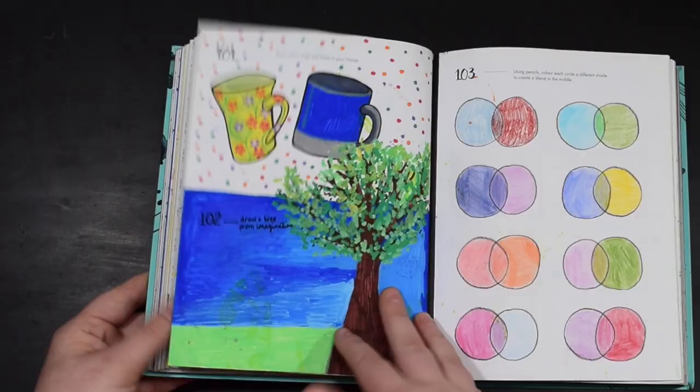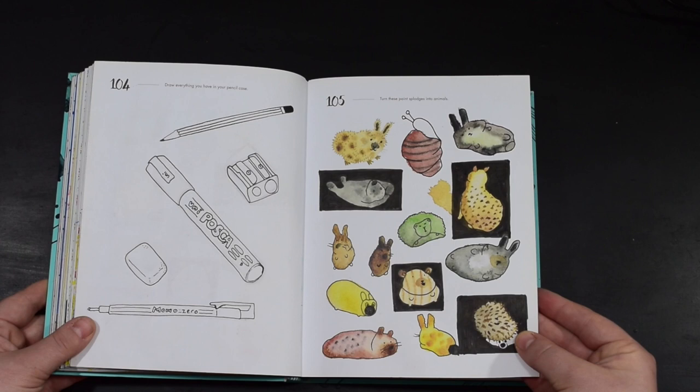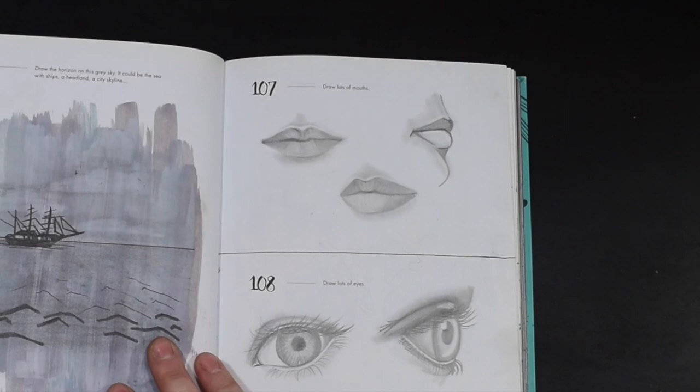We've got some coloring-in pages. We also had another turn the paint splotches into animals. Quite enjoyed my cat and my little otter lying on his back. That was fun. So here you can see we've been drawing some mouths and eyes, doing a bit of realism.